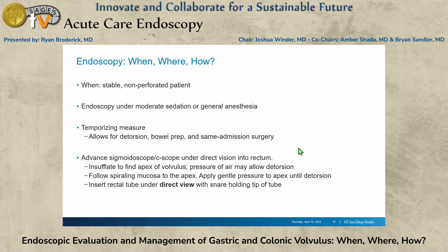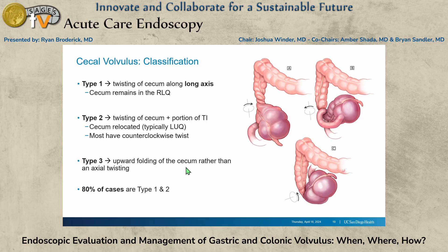You could potentially do a better resection with anastomosis. For the scope itself, advance the sigmoid scope or colonoscope under direct vision into the rectum. Insufflate to find the apex of that volvulus — it will tighten down into an apex with whirling mucosa. Pressure from the air may detorse it automatically, and be prepared for a big gush of air and fluid. If it doesn't, find that spiraling mucosa and keep applying gentle pressure at that apex with insufflation until you achieve detorsion. At that point you can insert a rectal tube under direct view — pull the scope out, take a snare with a drain side by side with your endoscope, and push up into the colon. This buys you time so you can do a bowel prep and get the patient to the operating room in a few days.